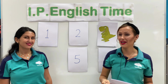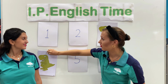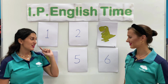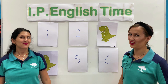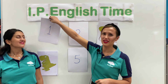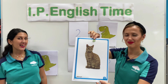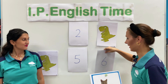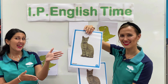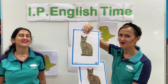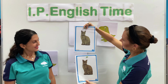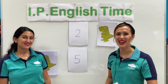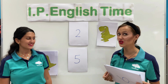Now we have to find the other matches. Teacher Val, can you give me two numbers, please? Number one and number six. Okay, let's have a look. Number one, what is it? Cat. And number six, what is it? Cat. Do we have a match? Yes! We have another match — we have two cats.